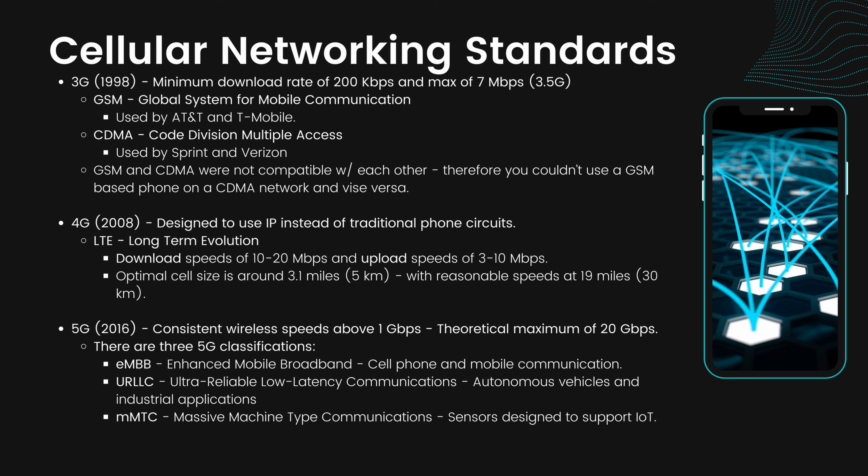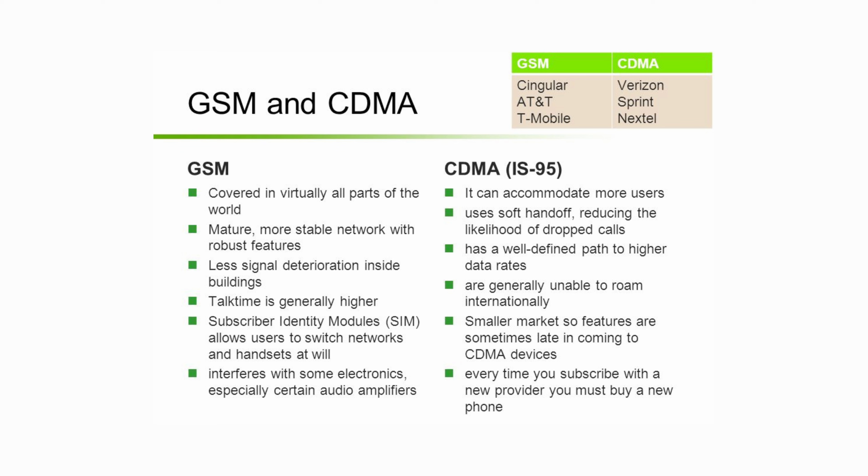Going into more detail, 3G was created in 1998. It had a minimum download speed of 200 kilobits per second and a max of 7 megabits per second. It also introduced GSM, global system for mobile communication, which was used by AT&T and T-Mobile, and CDMA, code division multiple access, which was used by Sprint and Verizon. GSM and CDMA were not compatible with each other, so you couldn't use a GSM-based phone on a CDMA network and vice versa.